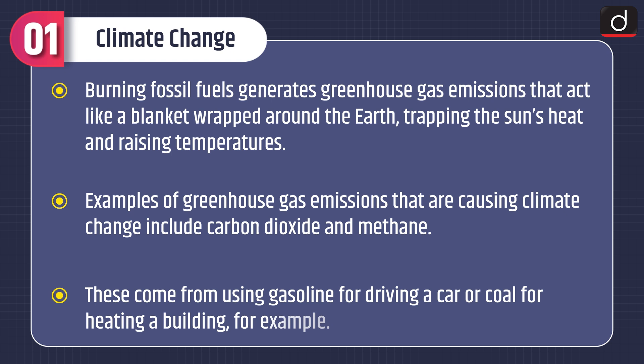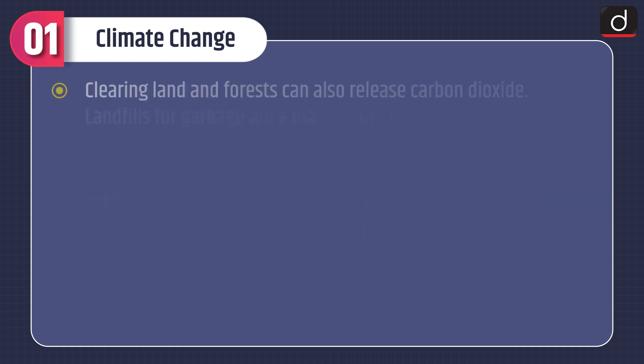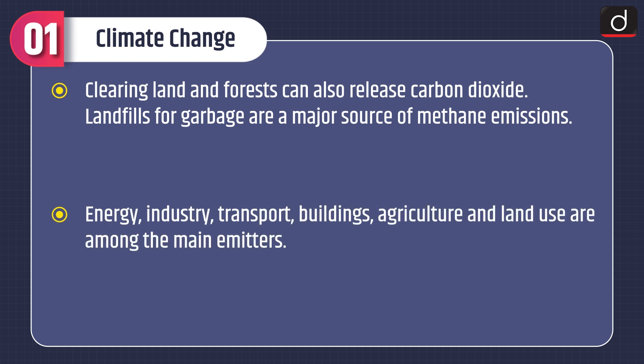Burning fossil fuels generates greenhouse gas emissions that act like a blanket wrapped around the earth, trapping the sun's heat and raising temperatures. Examples of greenhouse gas emissions causing climate change include carbon dioxide and methane. These come from using gasoline for driving a car or coal for heating a building. Clearing land and forests can also release carbon dioxide, and landfills for garbage are a major source of methane emissions.